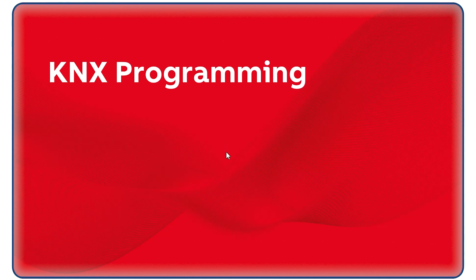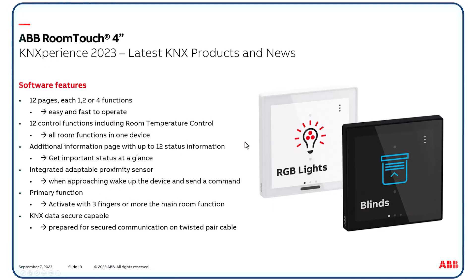Let's come now to KNX programming. First, a summary of the software features. Twelve pages, each can have one, two or four functions, for easy and fast operation. Twelve control functions including room temperature control can be assigned — this should be enough for all room functions in one device. The information page is an additional page with up to 12 status items, just to get important messages at a glance. The integrated proximity sensor wakes up the device when approaching. The primary function allows you to touch the screen with three or more fingers to activate the main room function, typically lighting control. And it's KNX Data Secure capable, prepared for secured communication on twisted pair cable.